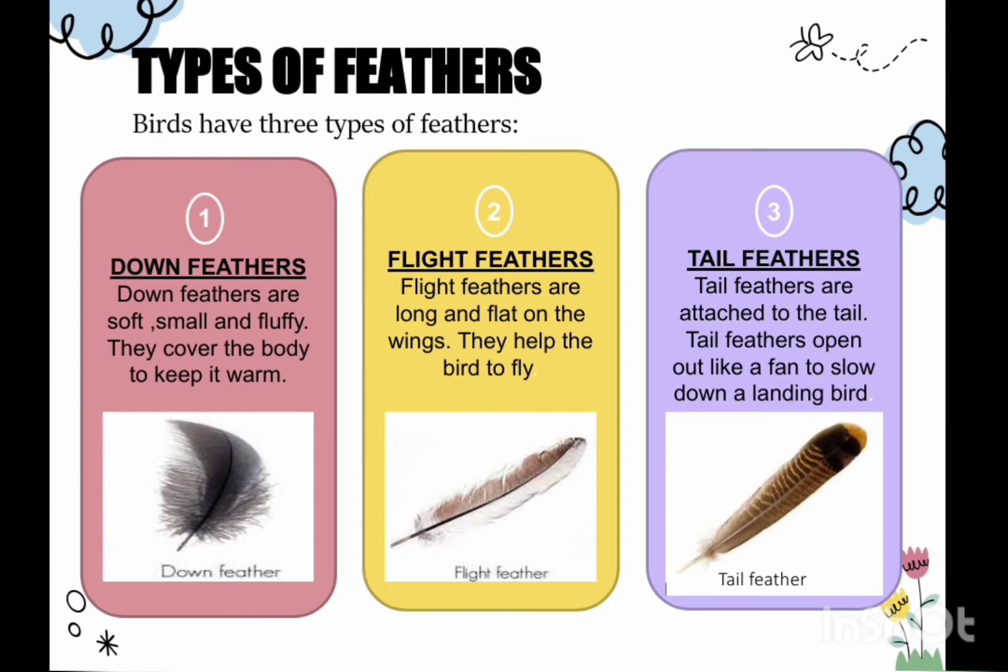How many types of feathers are there? There are 3 types of feathers. Number 1: Down feathers. Down feathers are soft, small, and fluffy. They cover the body of the bird to keep it warm.